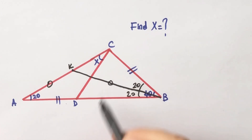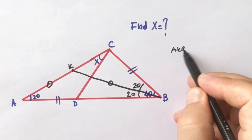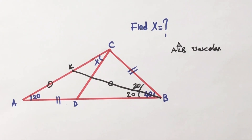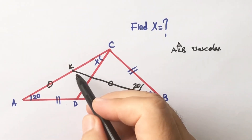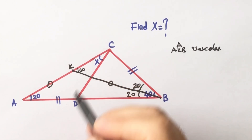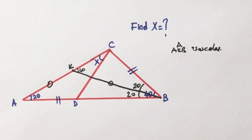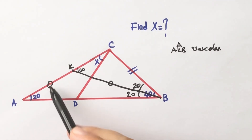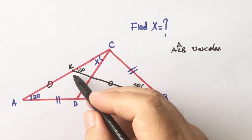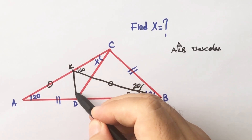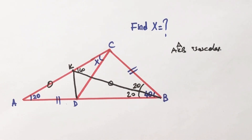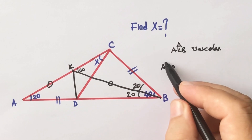AK must equal KB, so triangle AKB is an isosceles triangle. We know that two interior angles equal one exterior angle, so this angle must be 40 degrees. Notice that to the sides of this triangle there are double tick marks and 20 degrees on each side — double tick marks and 20 degrees — so if we connect these two points we get two congruent triangles.